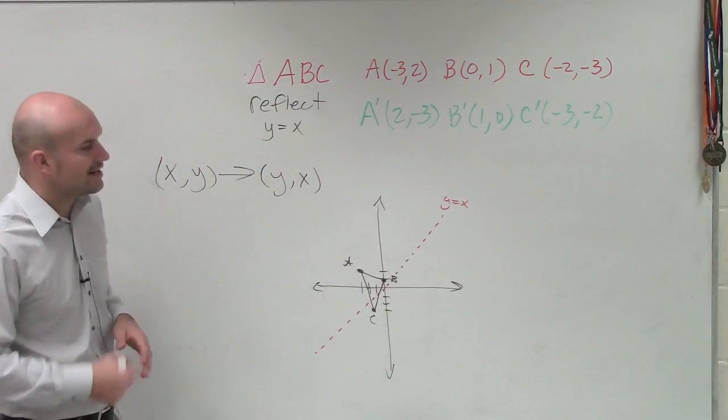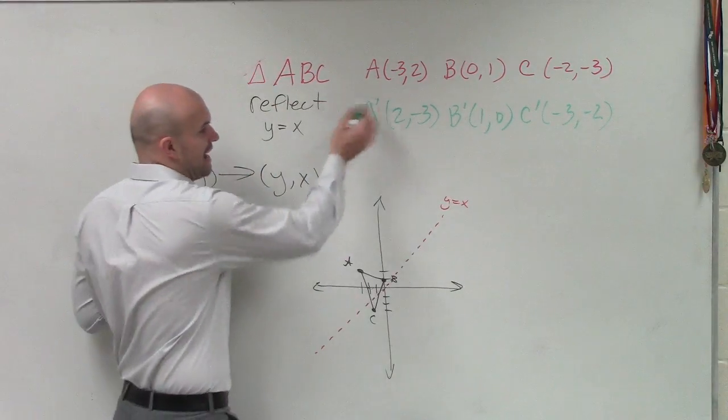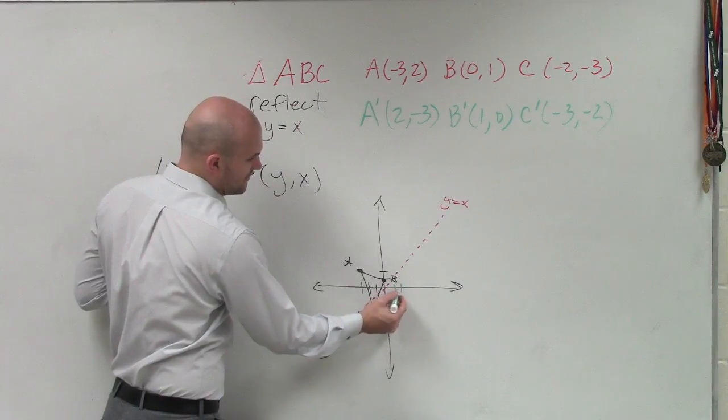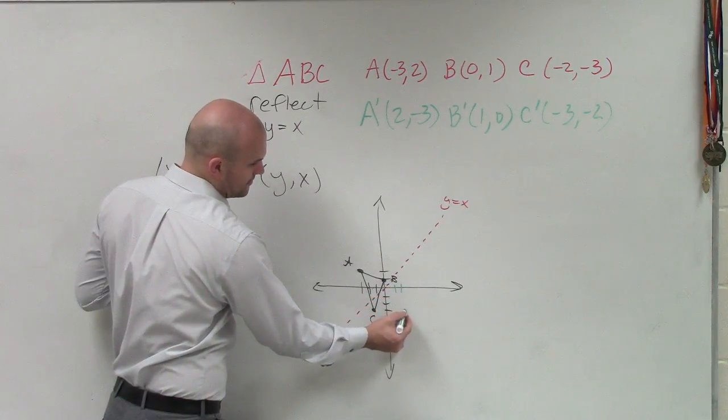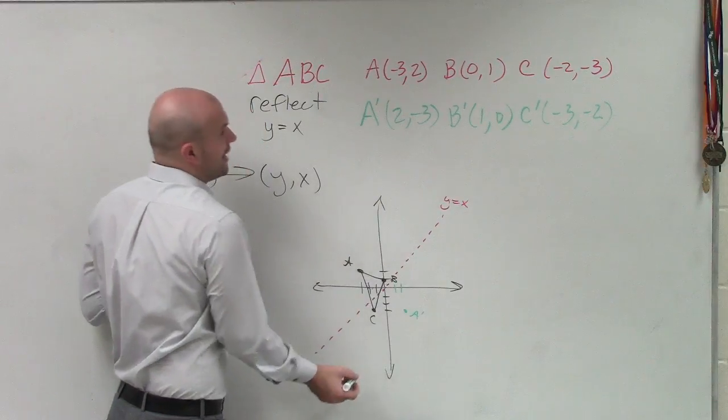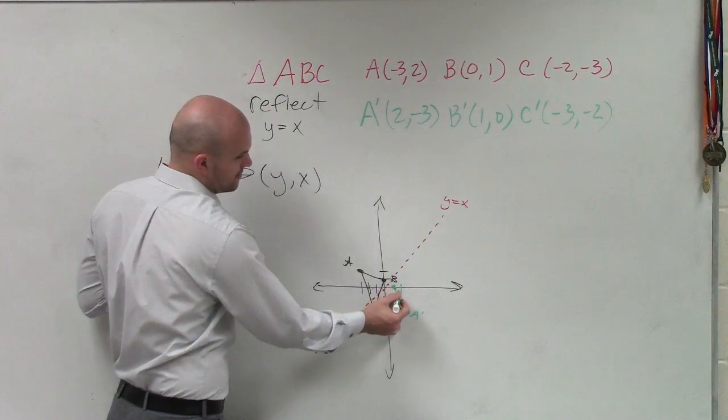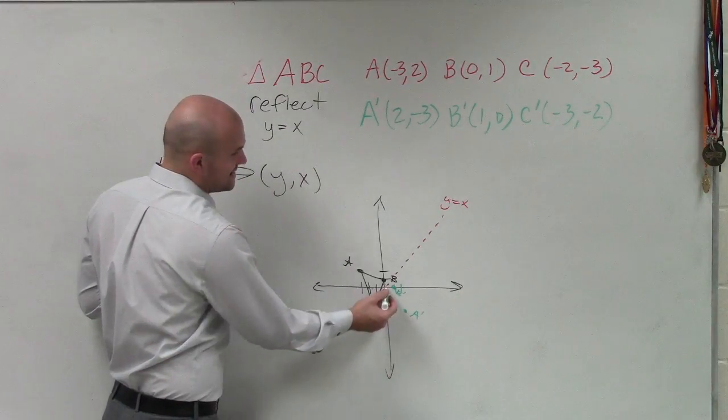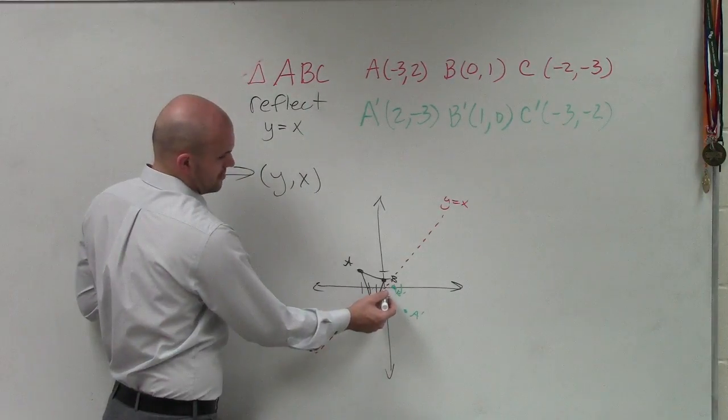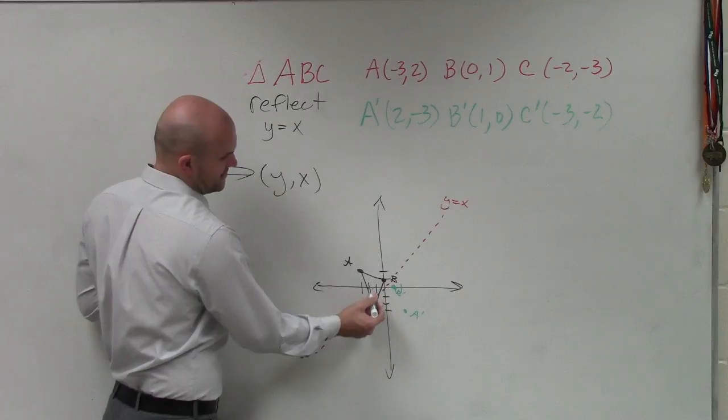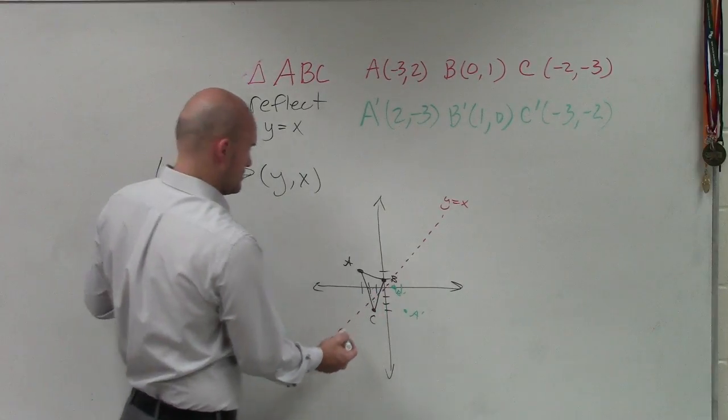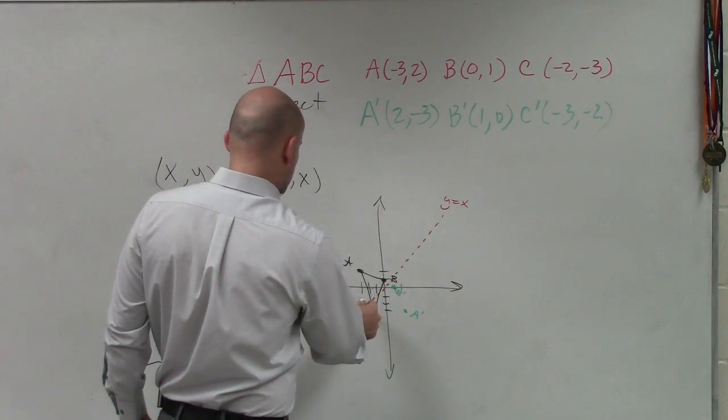So let's go ahead and now plot my new points. So now A prime is at (2, -3). I have B at (1, 0). And C is at (-3, -2).